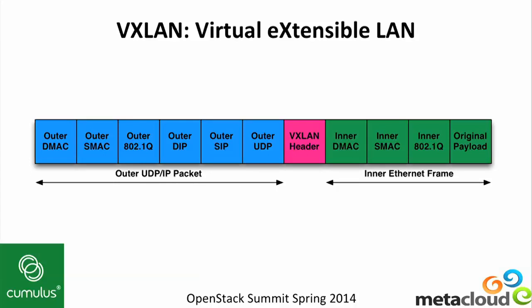We have a diagram here. On the left and right sides you should see familiar things. In blue, we have what amounts to a standard UDP IP packet — there's nothing special about this. In green on the far end, we have basically a standard Ethernet frame: destination MAC, source MAC, an optional 802.1Q tag, and then whatever the rest of the payload is. And stuck right in the middle in pink, you have the VXLAN header, which is just a little bit of extra data. That's really all VXLAN is — just that little bit of extra data and some smarts on either end to do something with it.